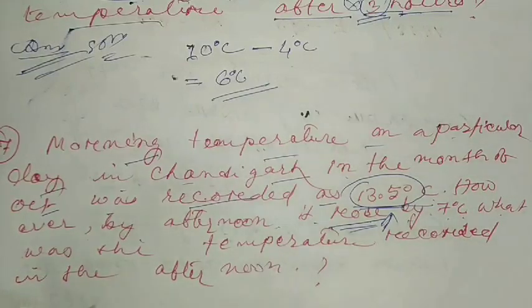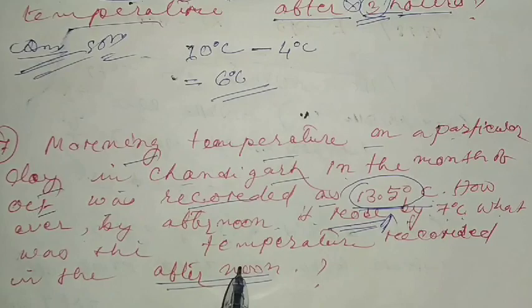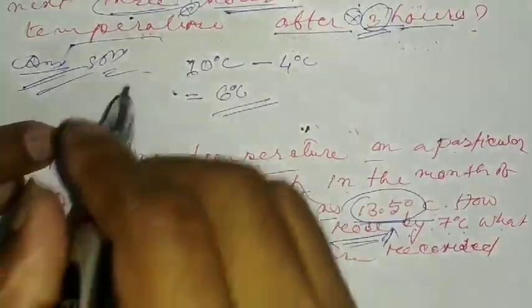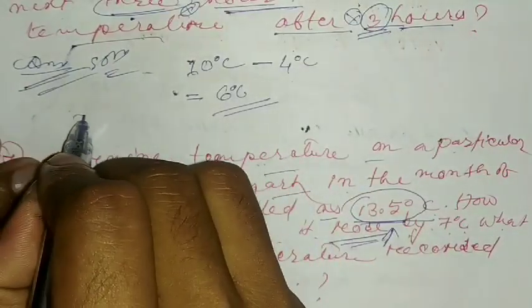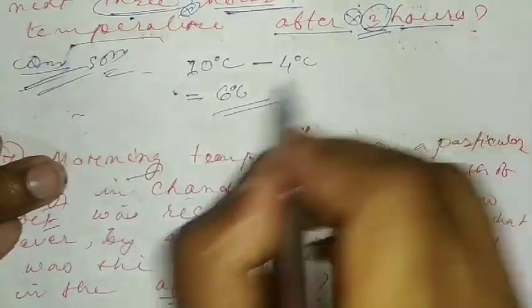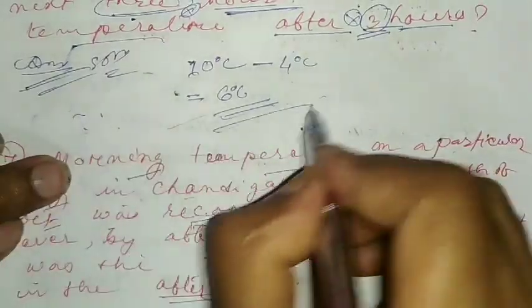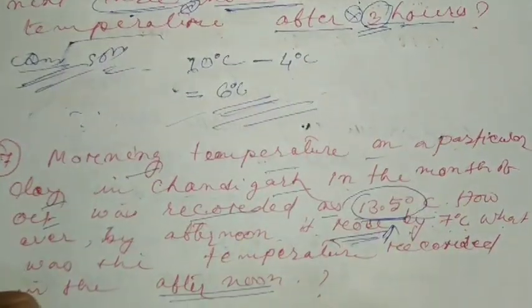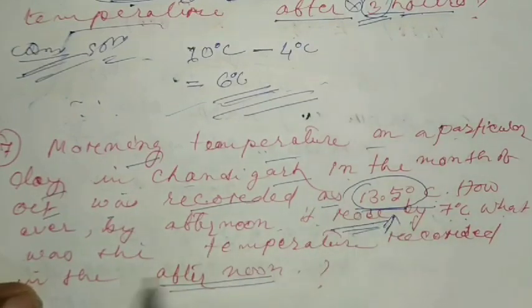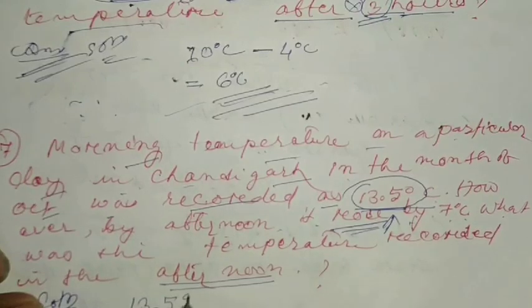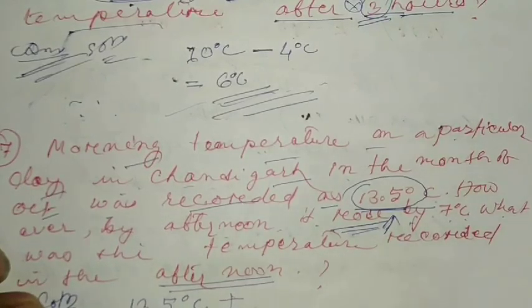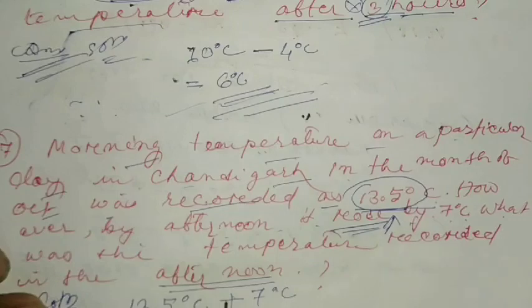What was the temperature recorded in the afternoon? The solution: 13.5 degrees Celsius rose by 7 degrees Celsius, so we add these two values.